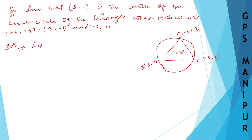Let ABC be the given triangle, and O be the center of the circle.